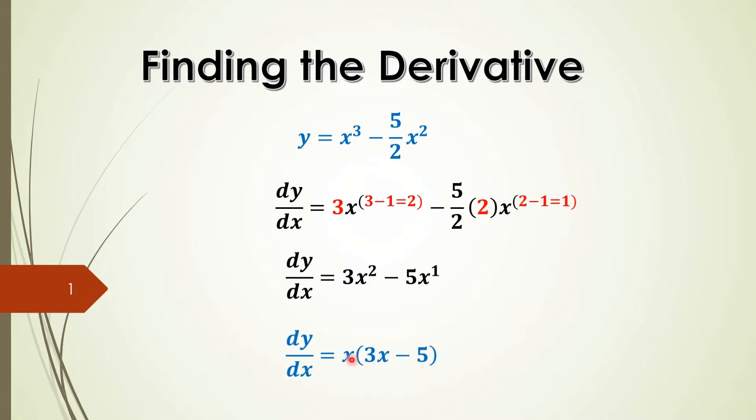So when I pull out an x from that, if I take that x and divide it back into here, I will have 3x, which is right there. And this x into there, I'll just have 5 right there.